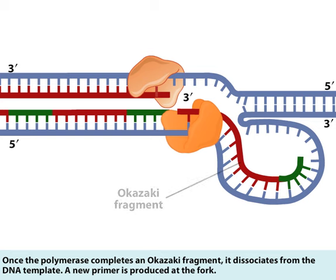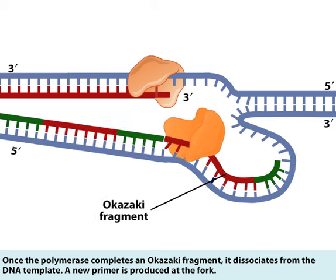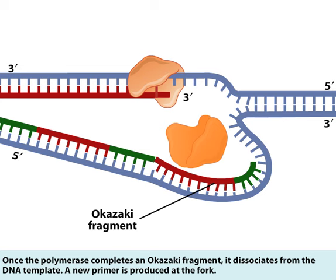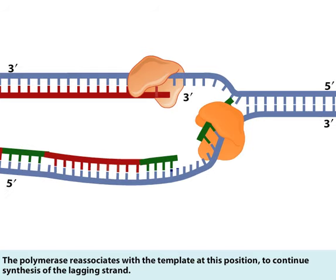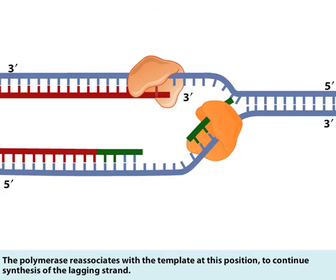Once the polymerase completes an Okazaki fragment, it dissociates from the DNA template. A new primer is produced at the fork. The polymerase reassociates with the template at this position to continue synthesis of the lagging strand.